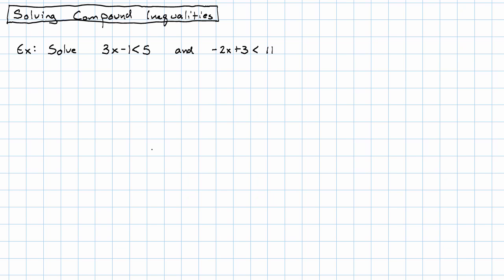Say we want to solve this inequality: 3x minus 1 is less than 5, and negative 2x plus 3 is less than 11. How would we go about solving this? It actually turns out that it's pretty simple.